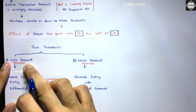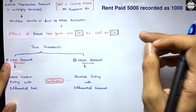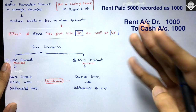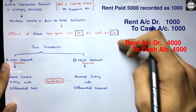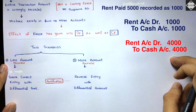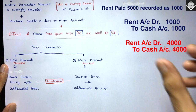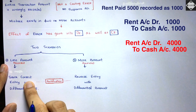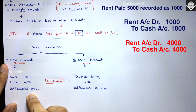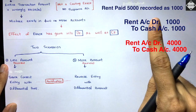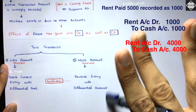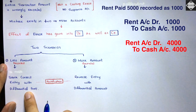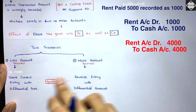If less amount has been recorded, pass the same correct entry with the differential amount. For example, rent account debit to cash was passed as one thousand. You additionally record four thousand — rent account debit to cash four thousand. Then the rent account will have five thousand and cash will be decreased by five thousand. Record the correct entry with the differential amount — that's the rectification.